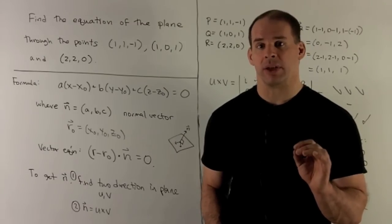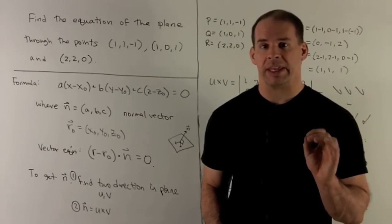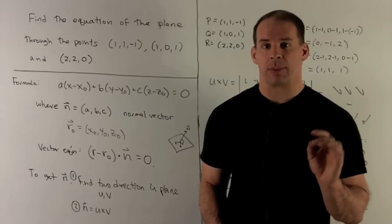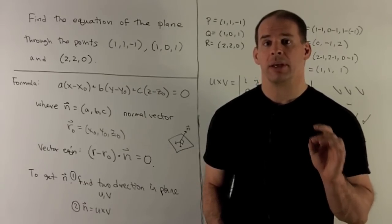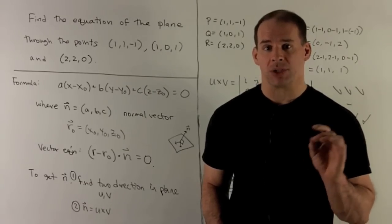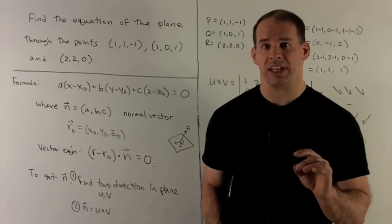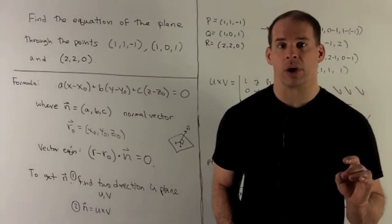First, we write down the equation of the plane. It's going to be given by A(X - X₀) + B(Y - Y₀) + C(Z - Z₀) = 0.